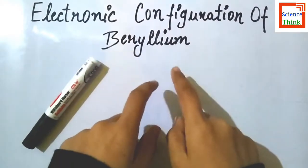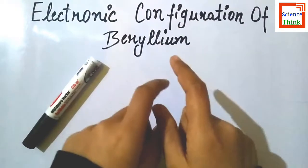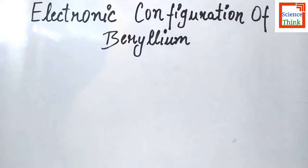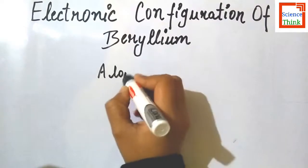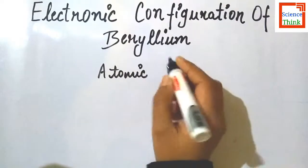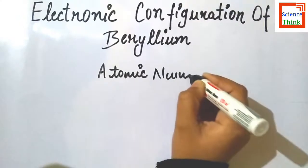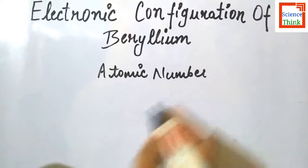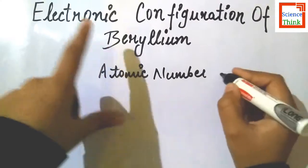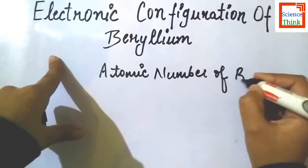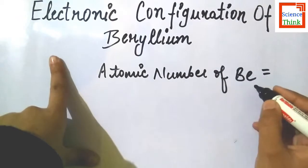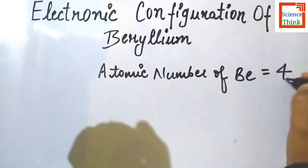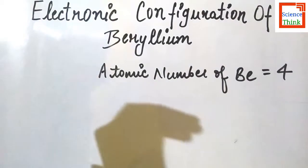We know the atomic number of beryllium. Since the atomic symbol of beryllium is Be, so I am writing it as B and small e. The atomic number of beryllium is 4, since it comes in the fourth number in the periodic table.